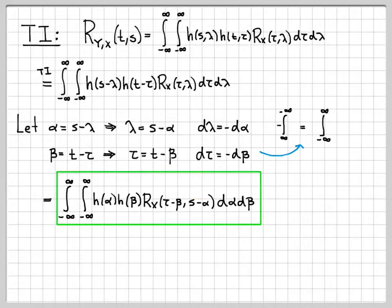For the case of a time-invariant system, this double integral expression is what we get for the cross-correlation function between the input and the output. We're not going to simplify it further — we'll keep this boxed as a special result. This is about as simple as it can get for the case of a time-invariant system.